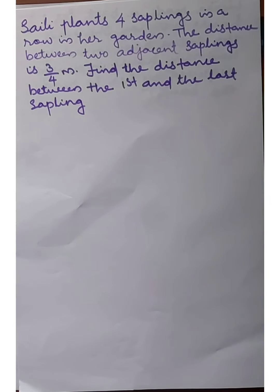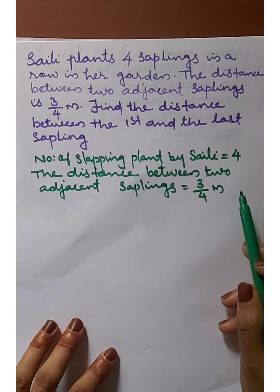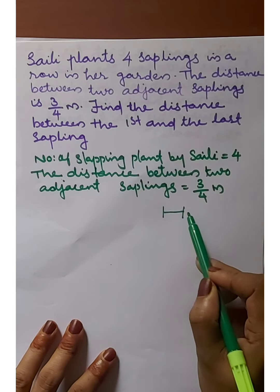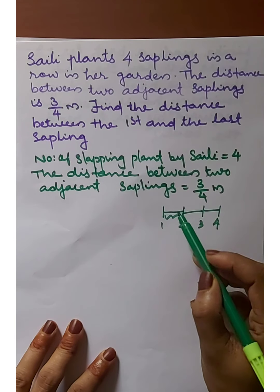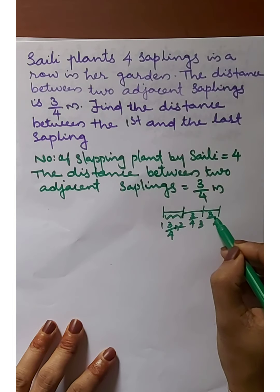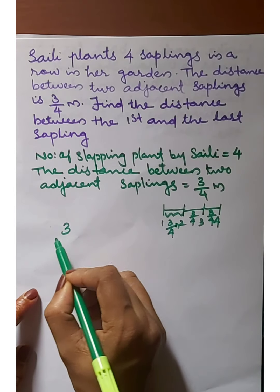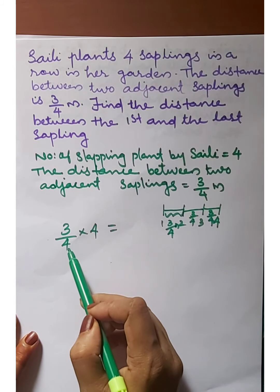Charlie plants four saplings in a row in her garden. The distance between two adjacent saplings is 3/4 meter. Find the distance between the first and the last sapling. The number of saplings planted by Charlie is 4, and the distance between two adjacent saplings is 3/4 meter. Here is plant one, plant two, plant three, and plant four. The distance between every adjacent pair is 3/4 meter, and the number of gaps between saplings is 3.